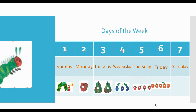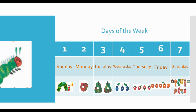On the seventh day, Saturday, do you remember all the foods he ate through? He ate through a lot of foods: one piece of chocolate cake, one ice cream cone, one pickle, one slice of Swiss cheese, one slice of salami, one lollipop, one piece of pie, one sausage, one cupcake, and one slice of watermelon.